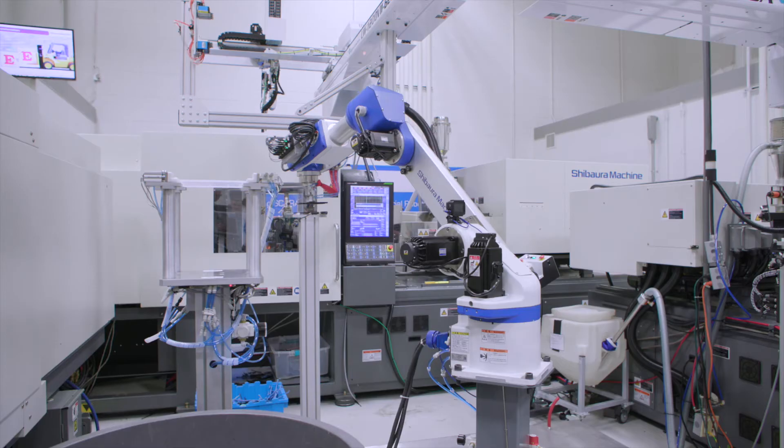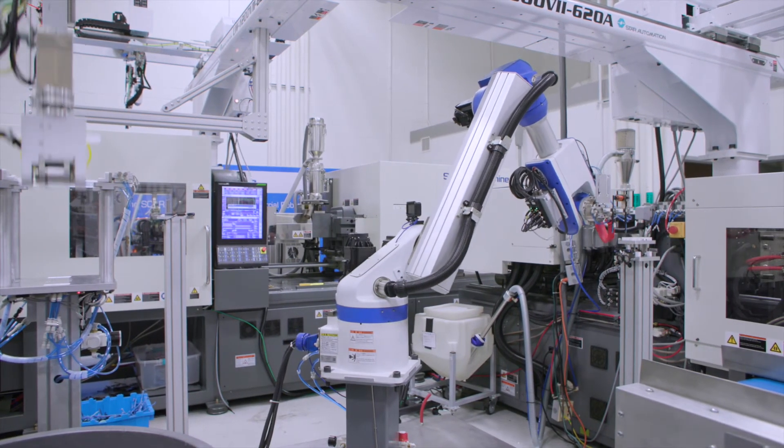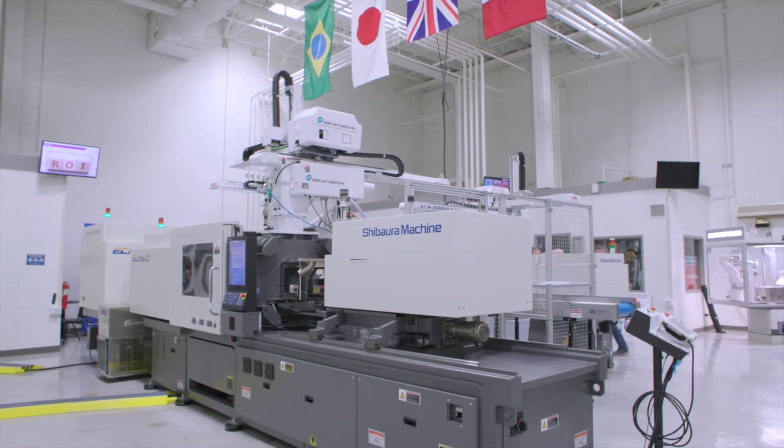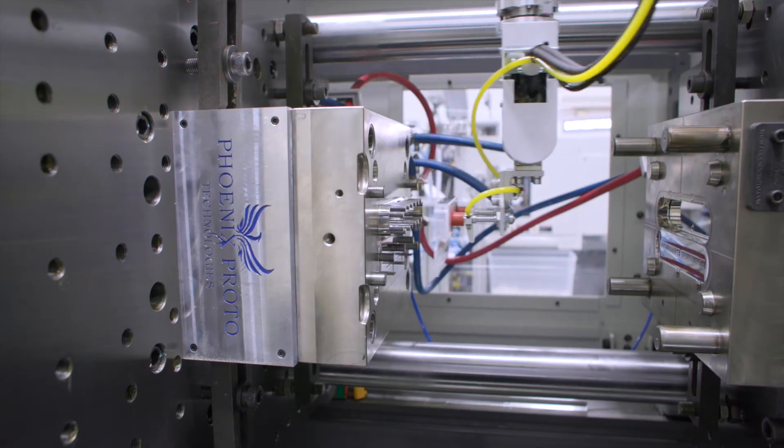When ready, the robot arm brings the stylus to the holder and then on to the final step of the assembly. The 200-ton SX3 is molding cases for the stylus.